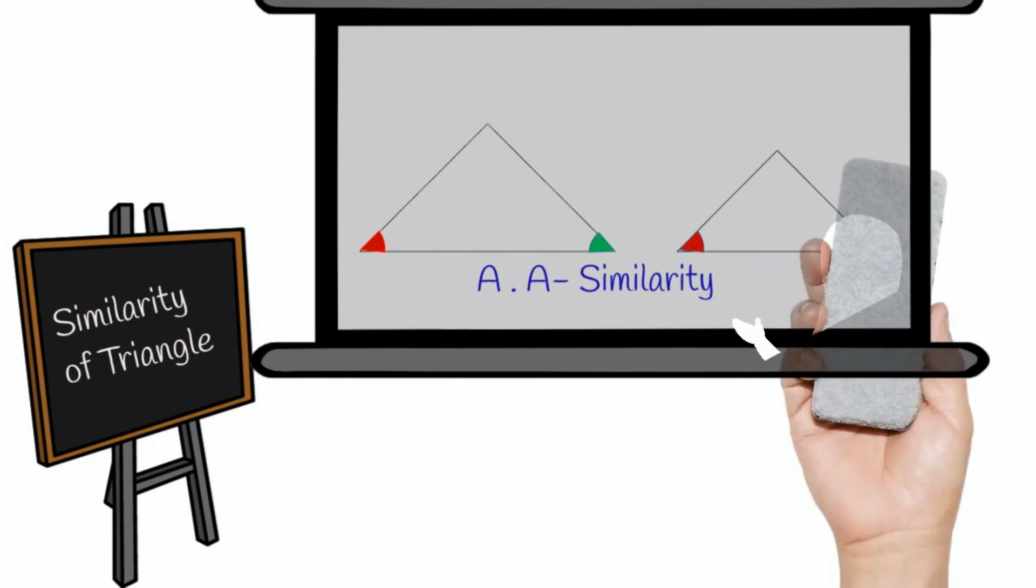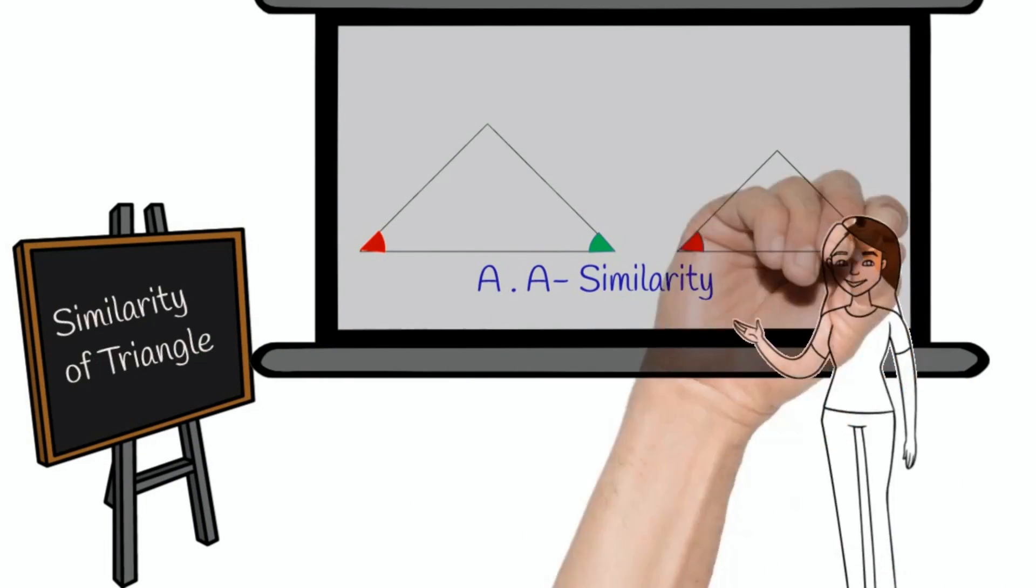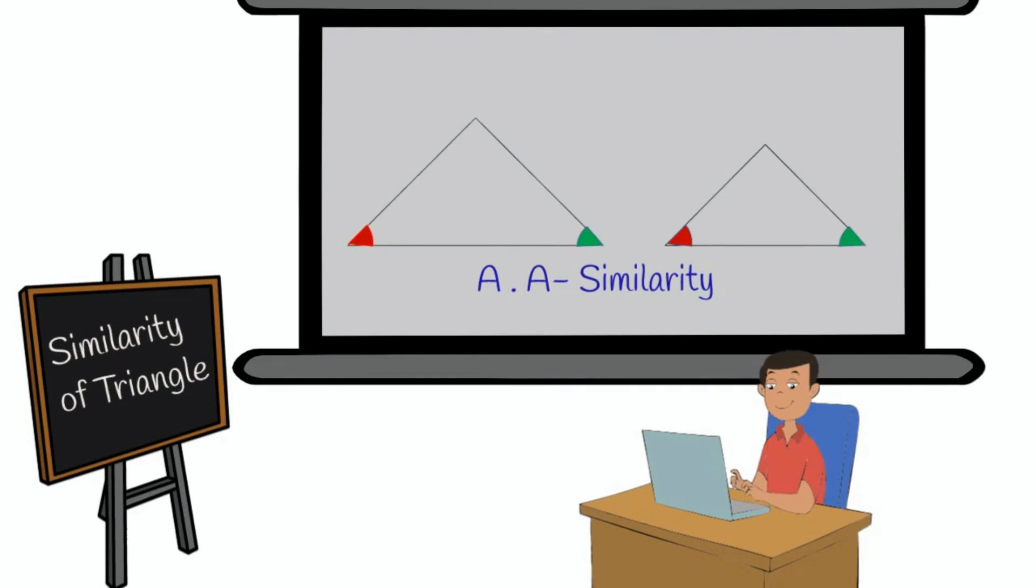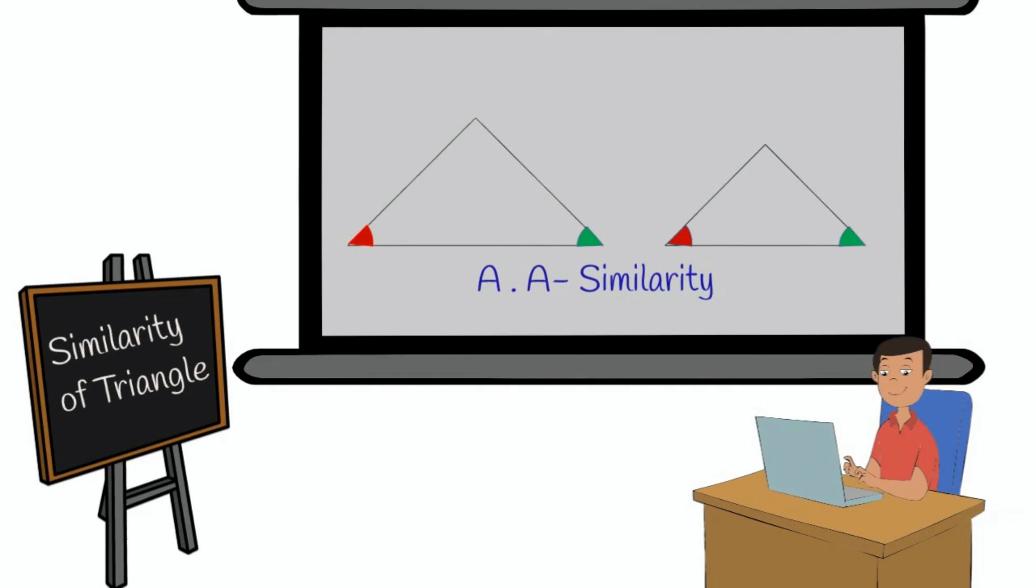Friends, we will use angle-angle similarity criteria in this question. We know two angles of one triangle is equal to another triangle, then the triangles are similar.